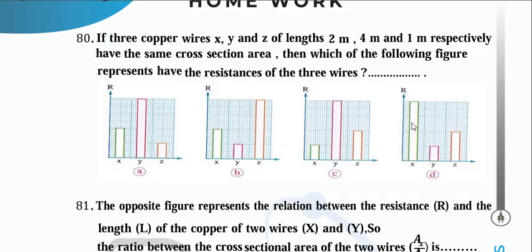Three copper wires X, Y, Z with lengths 2, 4, 1 respectively and same cross-section area. Since R is directly proportional to length, resistance order is Y > X > Z (4 > 2 > 1). Choose the graph that shows values 1, 2, 4 for Z, X, Y respectively.